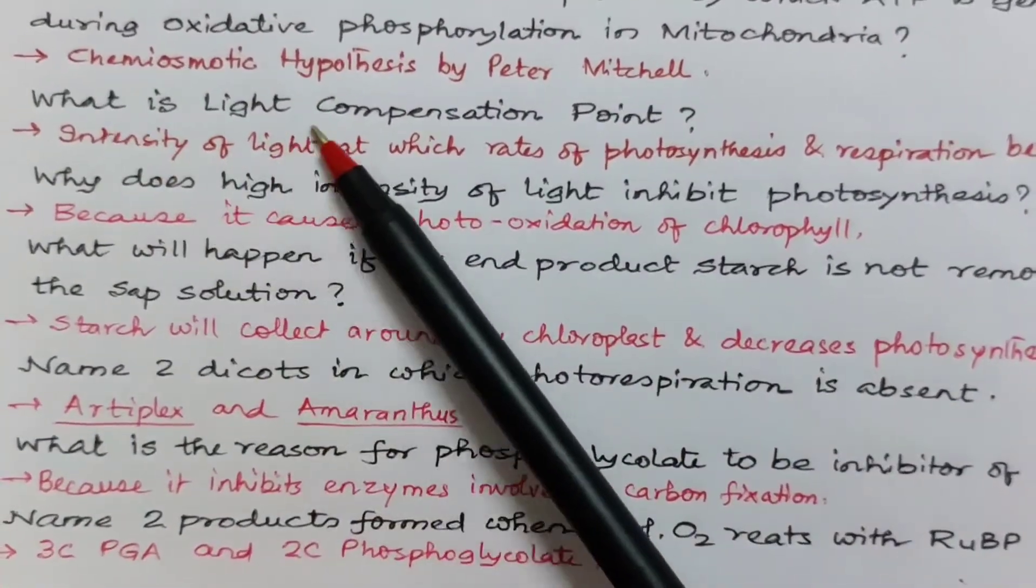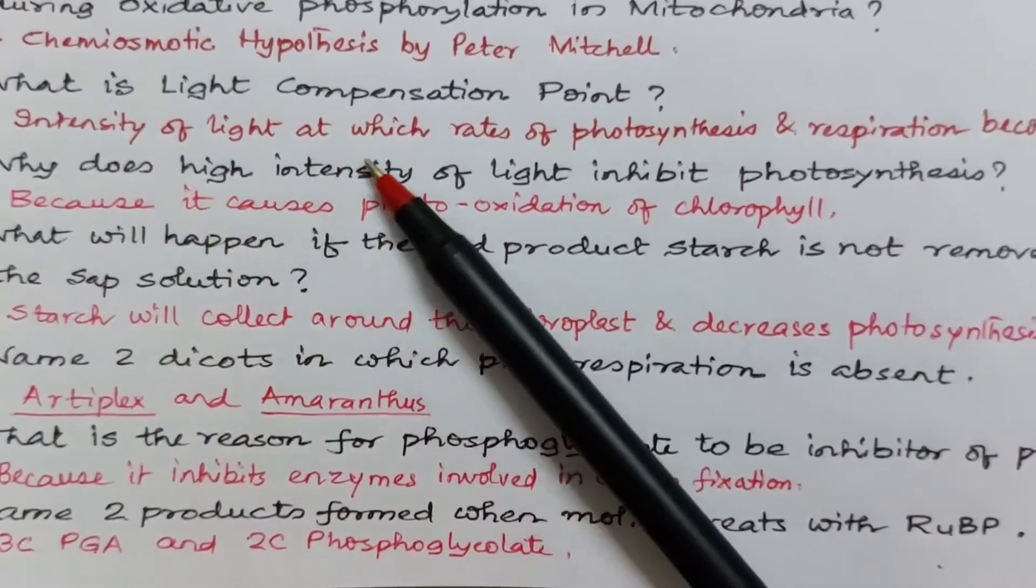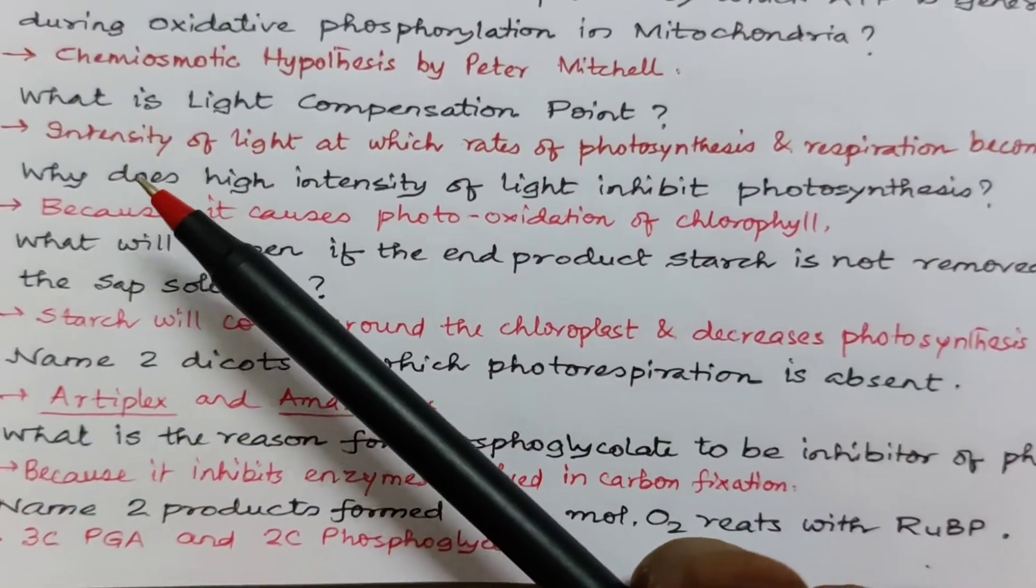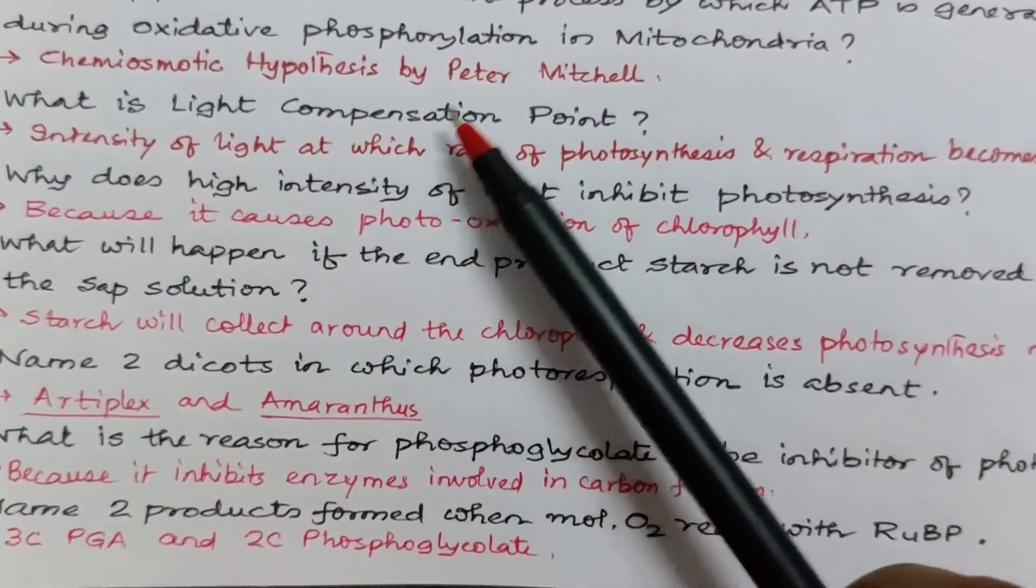What is light compensation point? The intensity of light at which the rates of photosynthesis and respiration becomes equal is known as light compensation point.